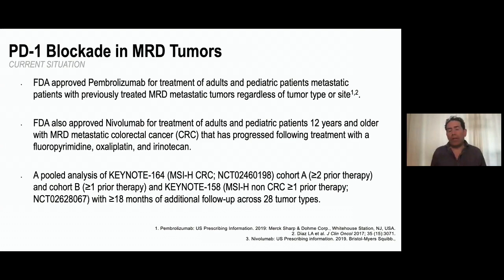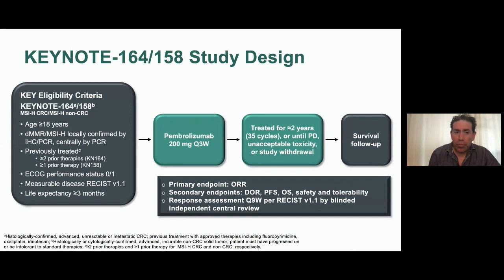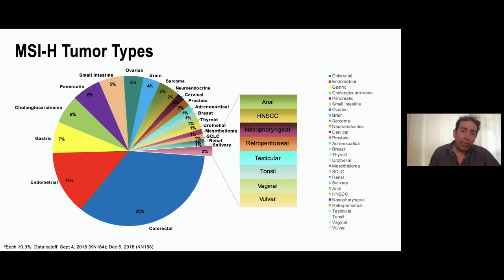The FDA approved pembrolizumab for adults and children with metastatic disease regardless of tumor type, and also approved nivolumab for patients 12 years or older with metastatic colorectal cancer. Based on pooled analysis, we began looking at tumor types beyond colorectal cancer — studies called Keynote 164 and 158, combining results from colorectal and non-colorectal cancers treated with anti-PD-1 therapy.